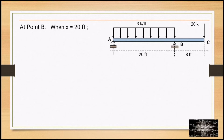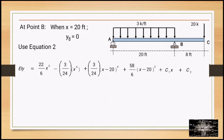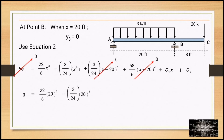At point B, when X equals 20 feet, since it is a pin support, deflection y_B equals 0. Using Equation 2: 0 equals (22/6)(20)³ minus (3/24)(20)⁴ plus C₁·(20). Solving, C₁ equals −466.667.